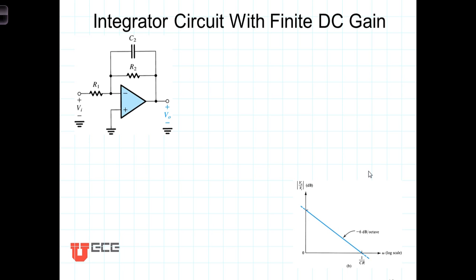We can address that problem by placing a relatively large resistor in parallel with the capacitor in the feedback circuit. This provides DC feedback and prevents the op-amp from saturating. Let's see how that works.